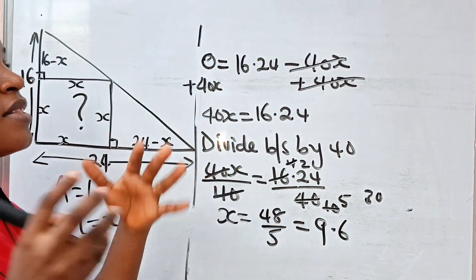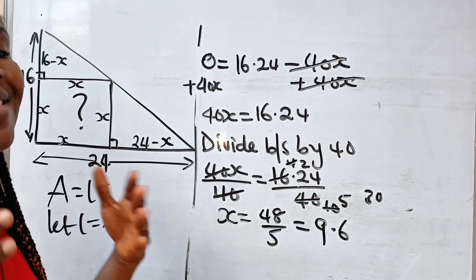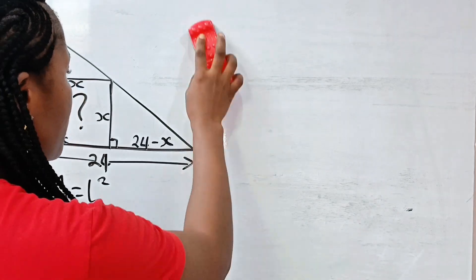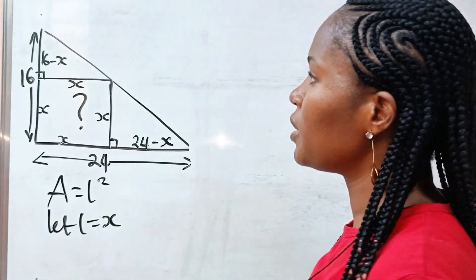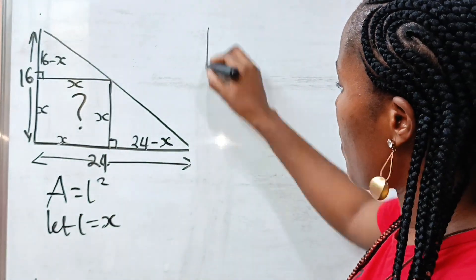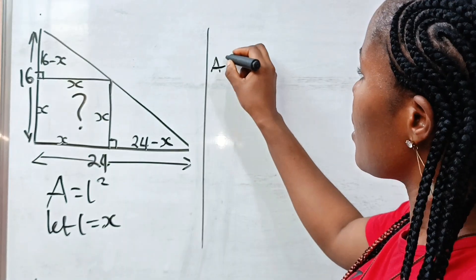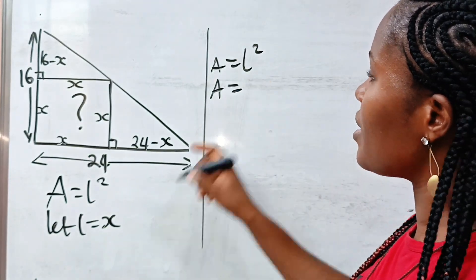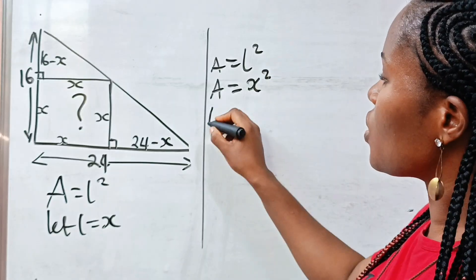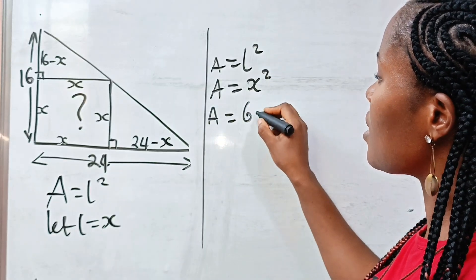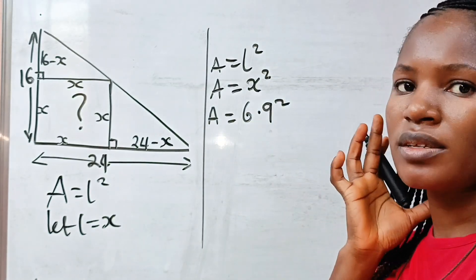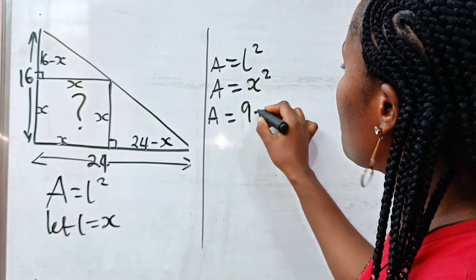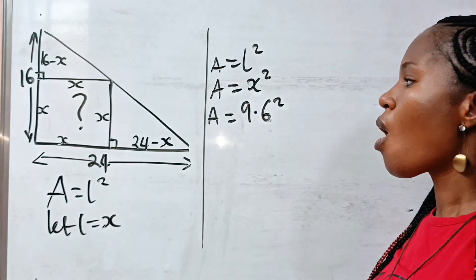Amazing, right? Now, the equation says we should find the area of this particular portion. The area of this portion is... Remember that the area is L squared. That means area is X squared. So it means that area is 9.6 squared.